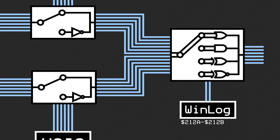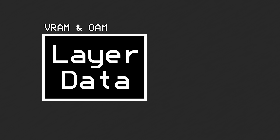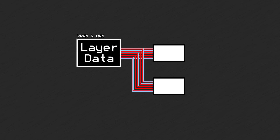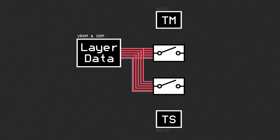Now let's switch over to the layer data. We have 5 data lines, one for each of the background layers and one for the object layer. The background lines contain a color and one bit for priority, and the object layer has a color and two bits for priority. Each of the 5 lines are split two ways, one for the main screen and one for the subscreen. All of the lines pass through an initial switch controlled via the through main and through sub registers at 0x212c and 0x212d. If the layer data is prevented from propagating forward, the layer is effectively disabled and the color data is treated as transparent.